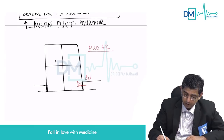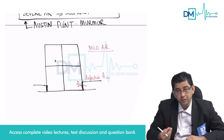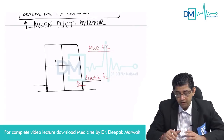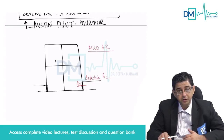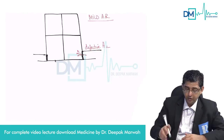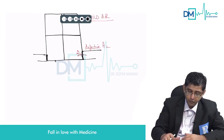This patient will also have a defective A2, but because less blood is coming back, the noise in the heart will be lesser. Less blood means shorter duration murmur; more blood means a longer duration murmur. So in mild aortic regurgitation, the murmur can be represented differently.